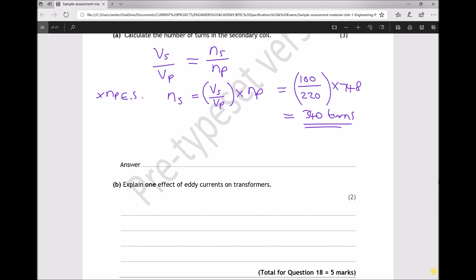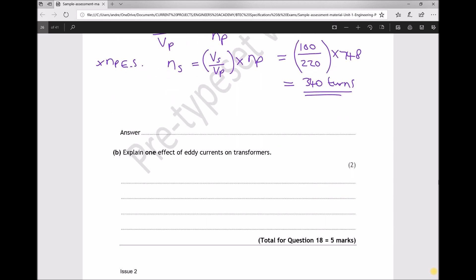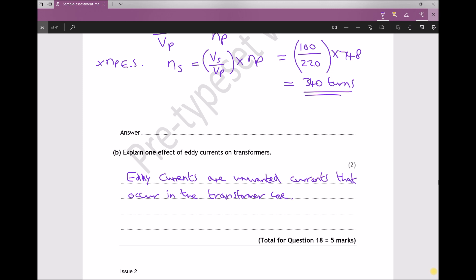So in terms of our answer, we should first specify what eddy currents are and where they occur. So eddy currents are unwanted currents that occur in the transformer core. We could then go on to say that this affects the efficiency of the transformer as the core heats up and releases heat energy.